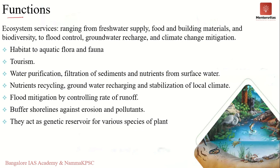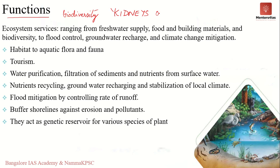Wetlands harbor tremendous biodiversity of plants and animals and are also known as the kidneys of the world because they clean up water as a natural function. In cities, water flows out as sewage and is treated in sewage treatment plants. However, STPs actually fail to remove nitrates and phosphates present in water, and sometimes even heavy metals. Such water, if pumped into wetlands, can have these nutrients and heavy metals removed.